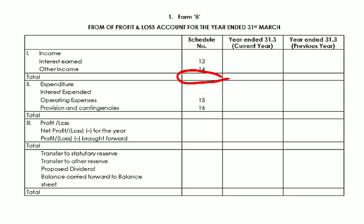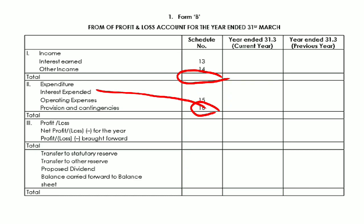On the expenditure side, interest expended is Schedule 15. If a bank has public deposits, funds, or loans, the interest paid on those is recorded here. Operating expenses are also paid. Provisions and contingencies are also part of expenditure but are not required to be listed in a separate order.